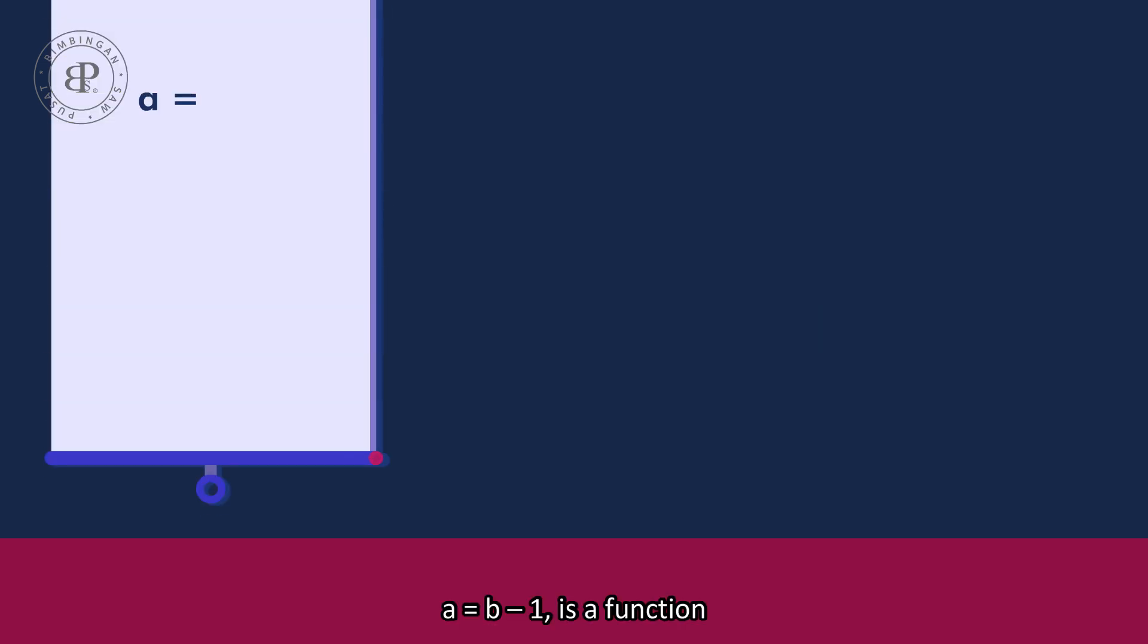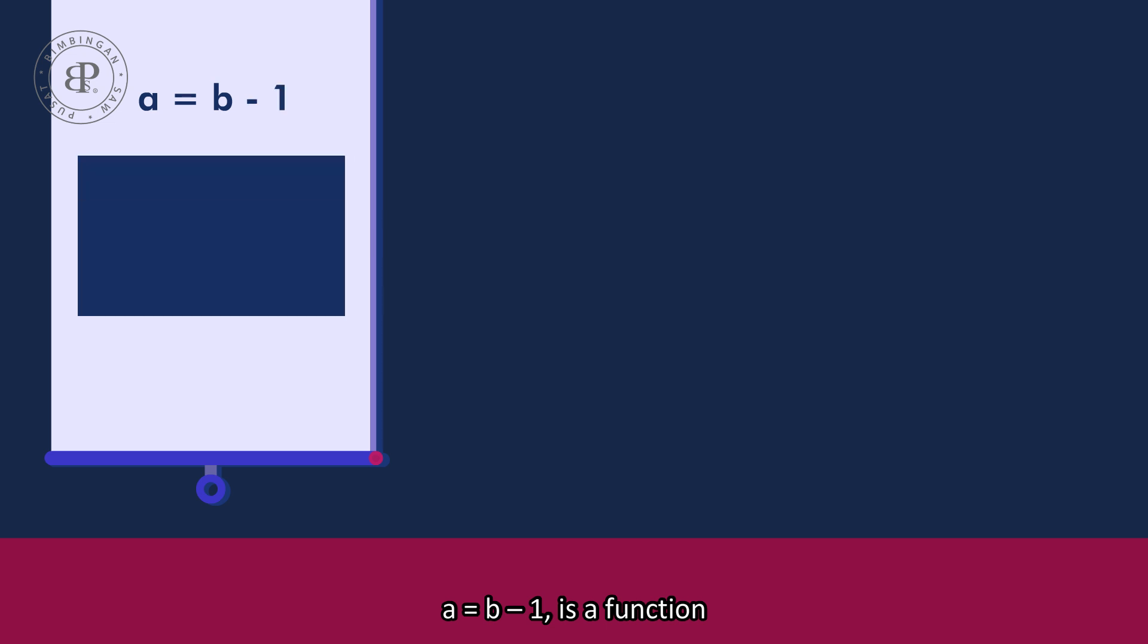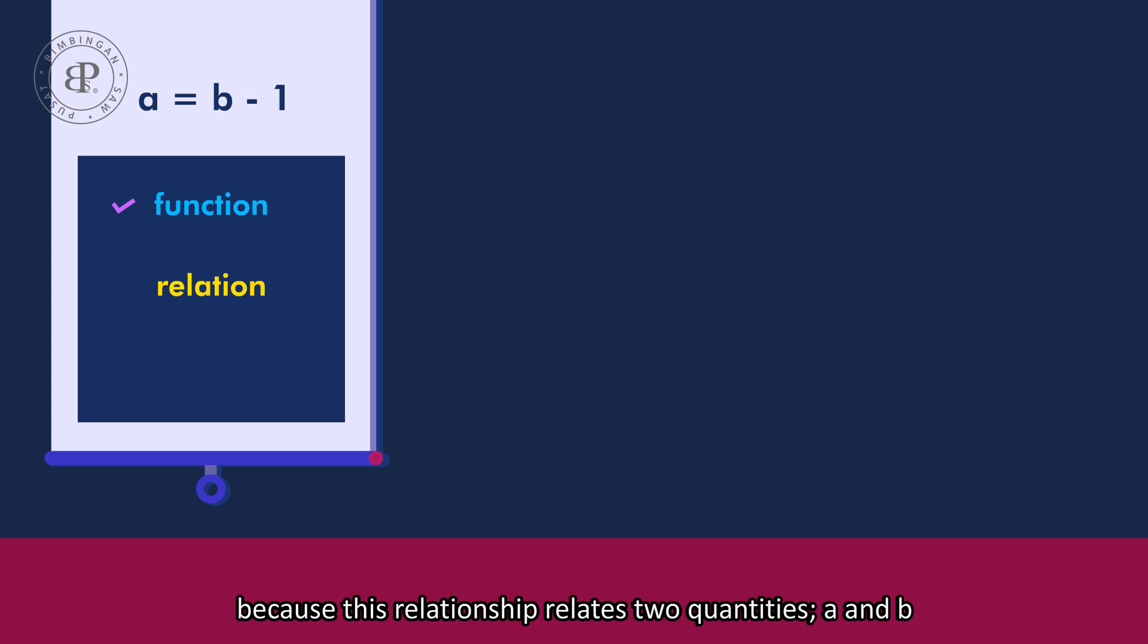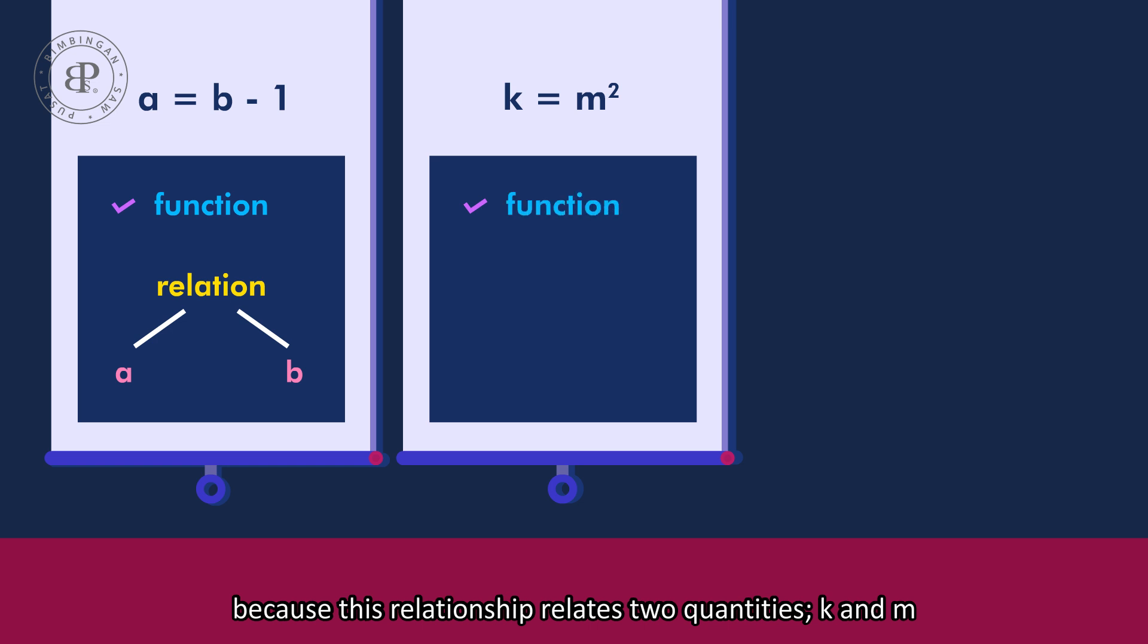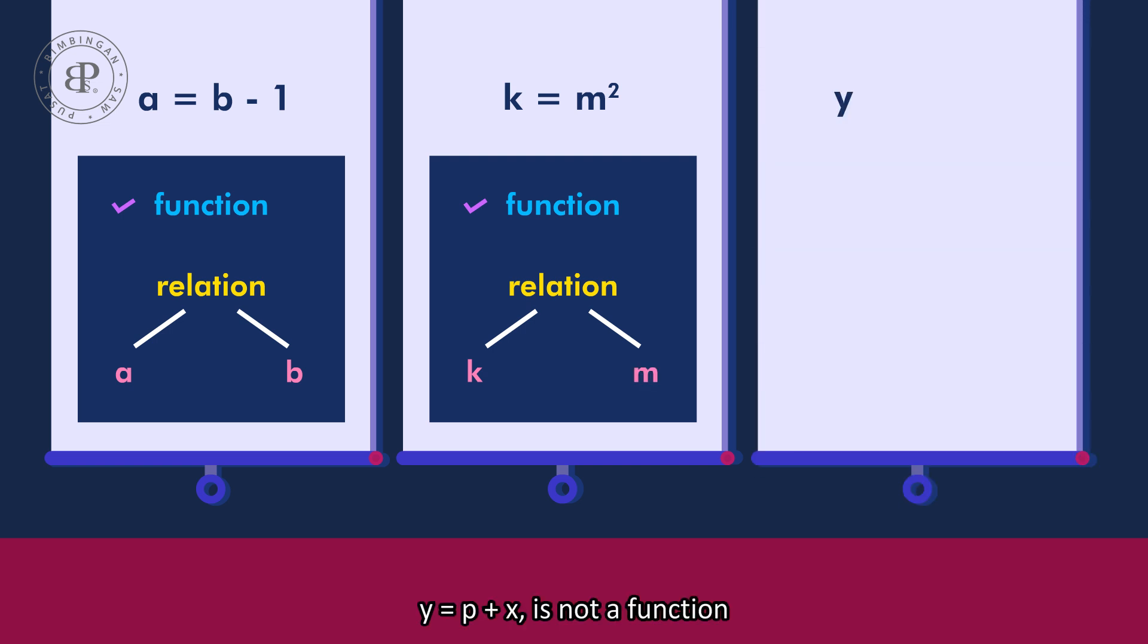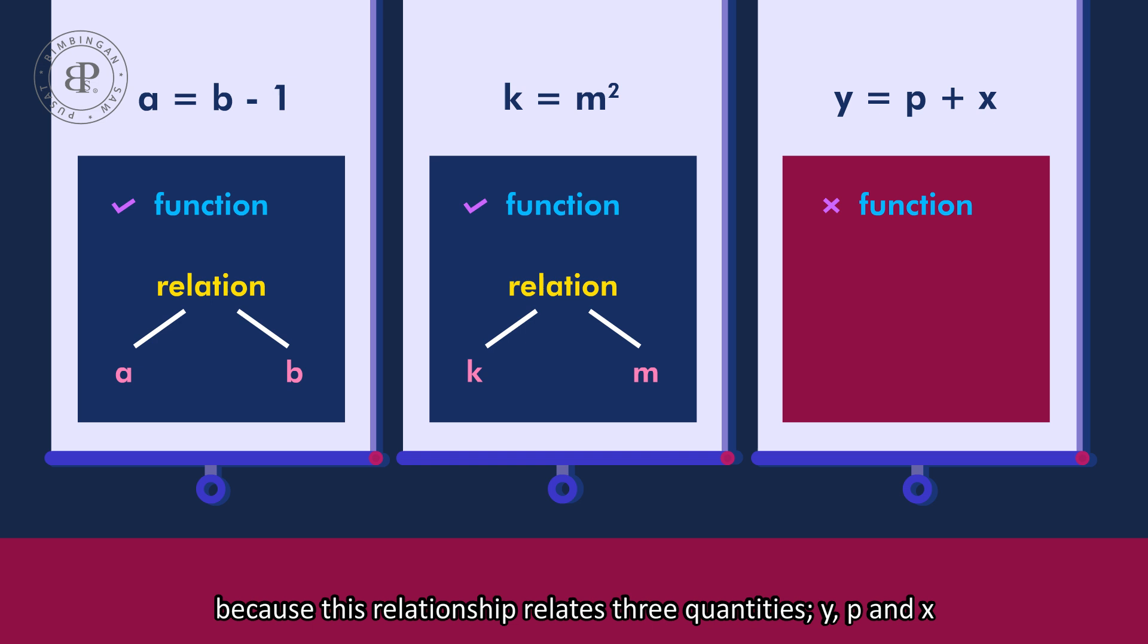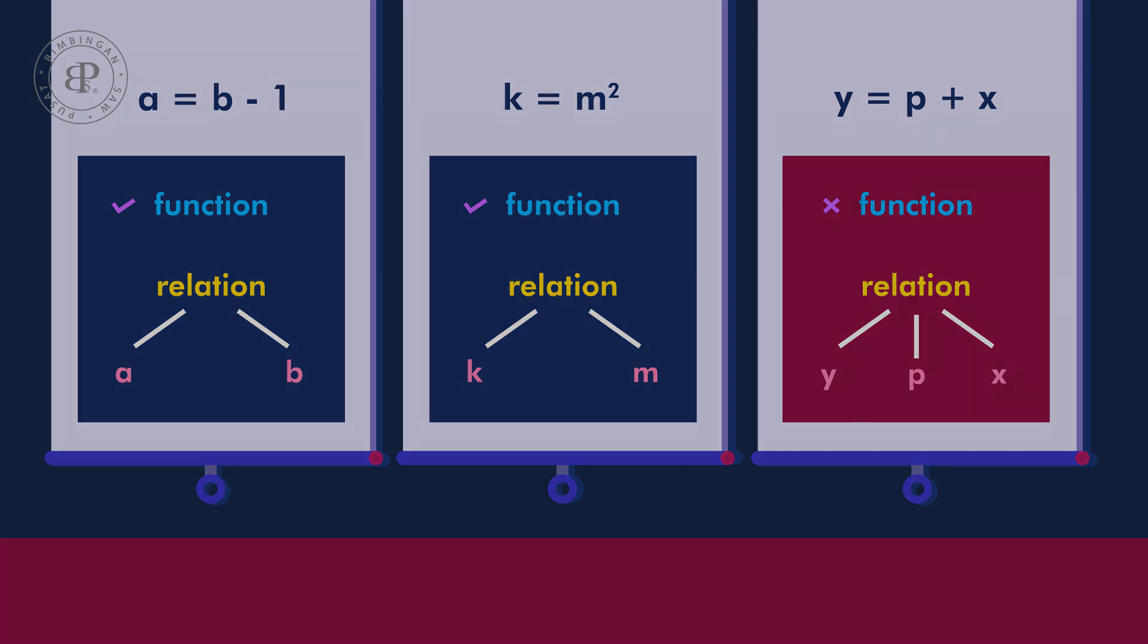A equals to B minus 1 is a function because this relationship relates two quantities A and B. K equals to M squared is a function because this relationship relates two quantities K and M. Y equals to P plus X is not a function because this relationship relates three quantities: Y, P, and X.